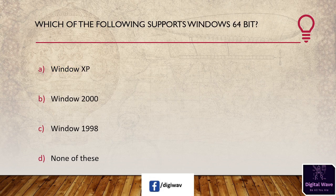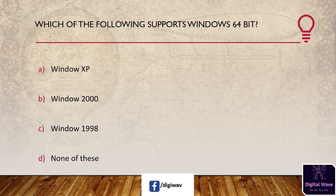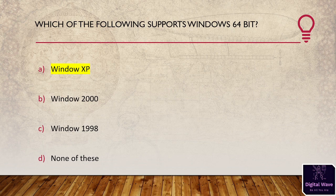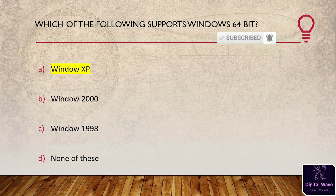Next question: which of the following supports Windows 64-bit? Options: Windows XP, Windows 2000, Windows 1998, none of these. The right answer is Windows XP. Windows XP supports 64 bits and is designed to expand the memory address space. Its original name is Microsoft Windows XP Professional X64 and it is based on the x86-64 architecture.